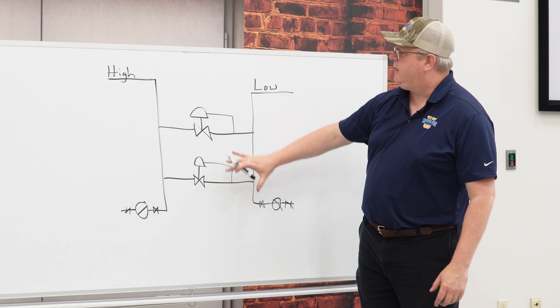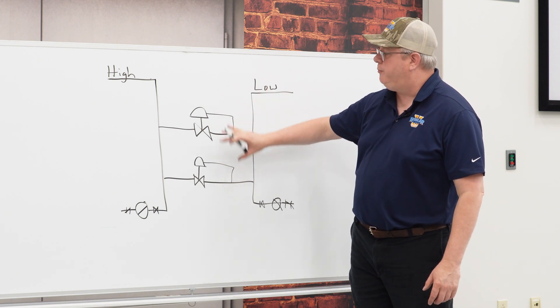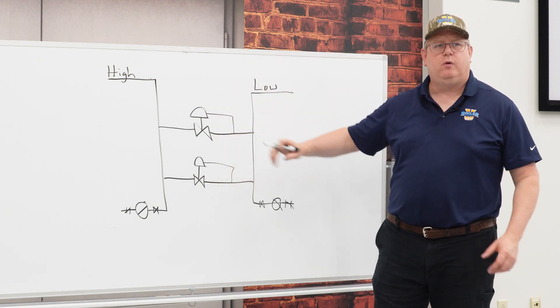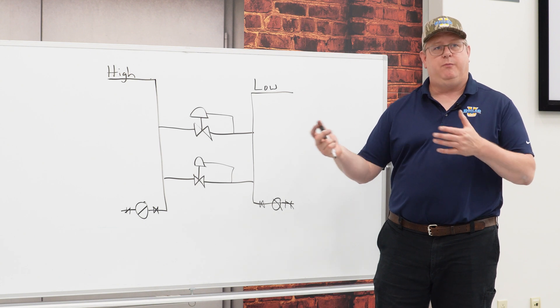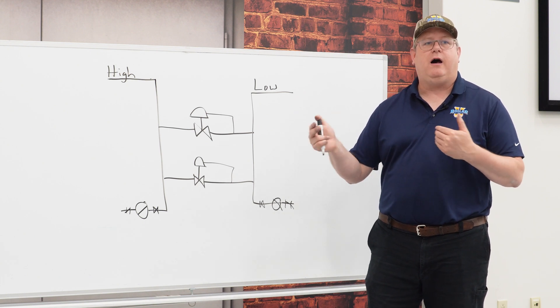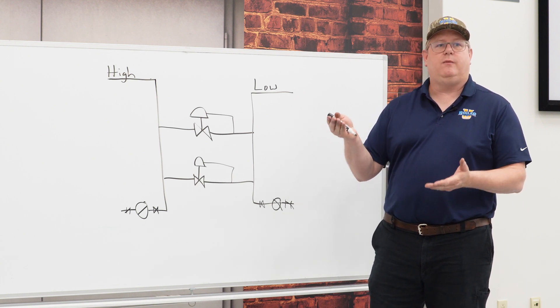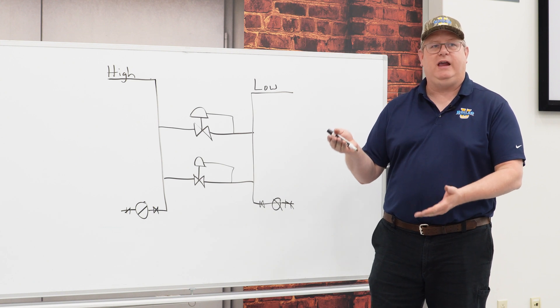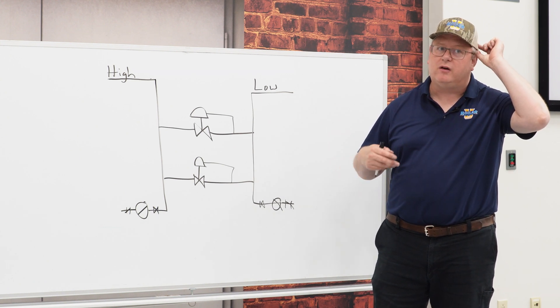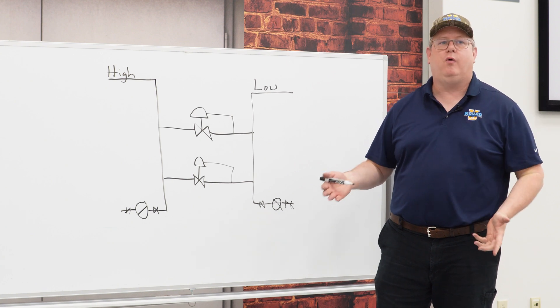If we set, in this case, the set point of both PRVs the same, we're really kind of eliminating the benefit of having two valves because they're both opening, they're both closing simultaneously, and that's eliminating some of the better control that we're shooting for.